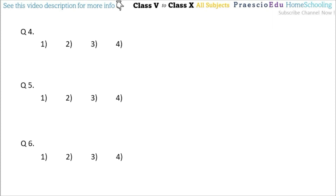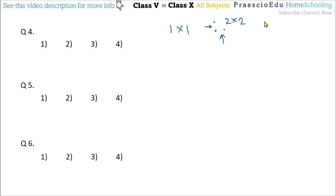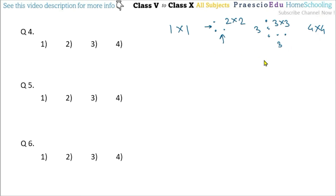Question number 4: if you see the figure, in the first square there is 1 by 1, then in the next figure there are 2 by 2 dots, and in the next figure 3 by 3 dots. So to replace the question mark we need a 4 by 4 pattern — 4 dots vertically and 4 dots horizontally — and this is given in option number 2.